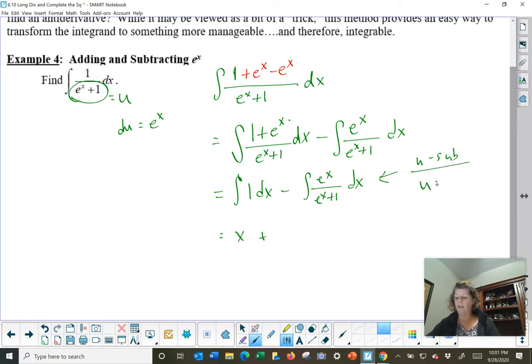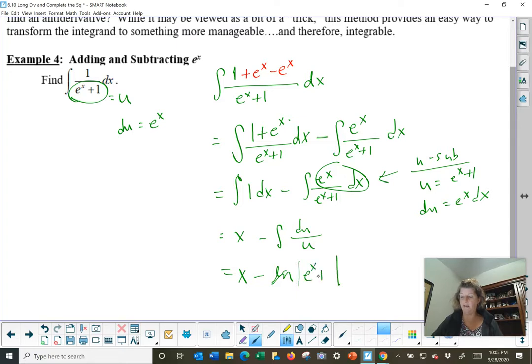This one, we would use a u sub. That u sub would say let u equal the denominator e x plus 1. And looky here, du equals e x dx. Perfect. This becomes a minus integral du for the e x dx over a u which we recognize as natural log integration. Natural log of absolute value u which is e to the x plus 1 plus c. It's really cool the way that works. Just by adding and subtracting the same thing we can get this nice grouping to work out super smooth.